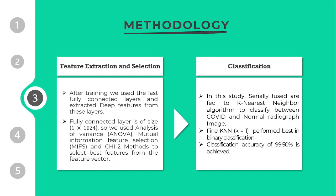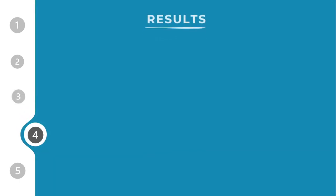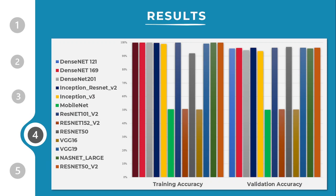After selecting the best features, we fused them and fed them to the K-Nearest Neighbor classifier to classify between COVID and normal radiograph images. KNN with K=1 performed best for binary classification and gave us a classification accuracy of 99.5%. These results summarize the entirety of our research findings.